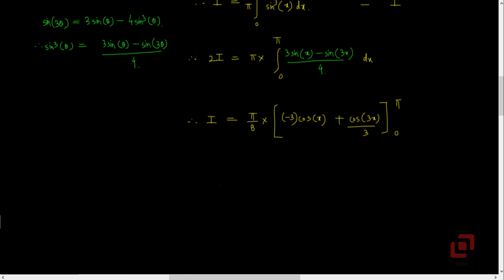Therefore I will be equal to — shifting 2 here — pi by 8 into the integral. The first term is 3 sin(x), whose integral is minus 3 cos(x). The second term is sin(3x), whose integral is minus cos(3x) upon 3, with limits 0 and pi. Let us first substitute x as pi: first term gives cos(pi) which is minus 1, so minus 1 into minus 3 gives 3; cos(3pi) is again minus 1, so the second term gives minus 1 upon 3.